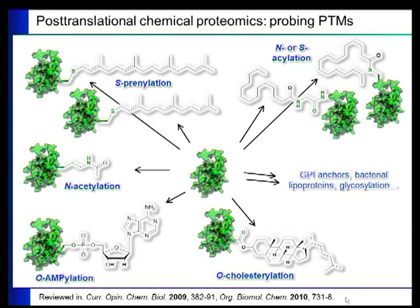This type of technology has been applied to a lot of modifications. In our lab, we've applied it to S-prenylation, N- and S-acylation, O-cholesterolation, O-AMPylation, and N-acetylation. It can also be applied to a large number of other things, such as GPI anchors, bacterial lipoproteins, and glycosylation — a whole range of different modifications addressable using this metabolic tagging technology.